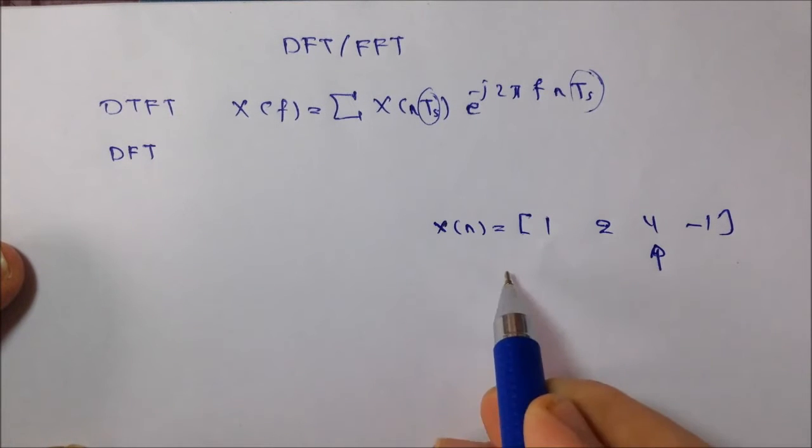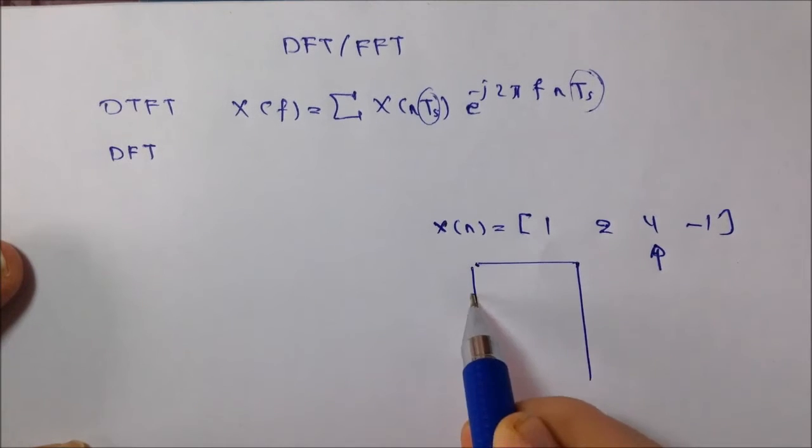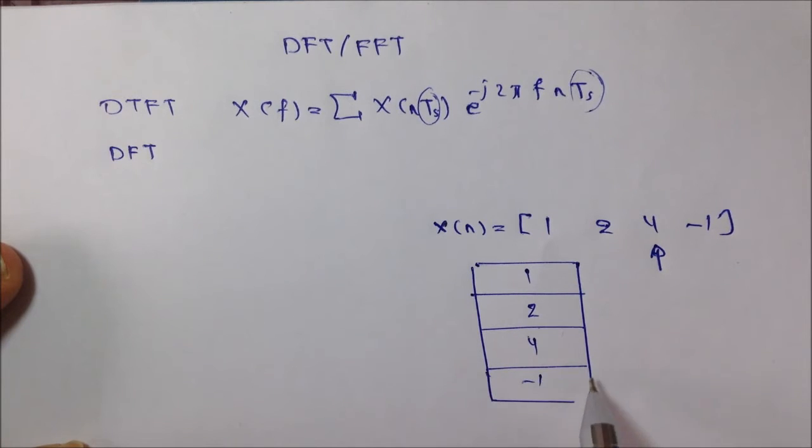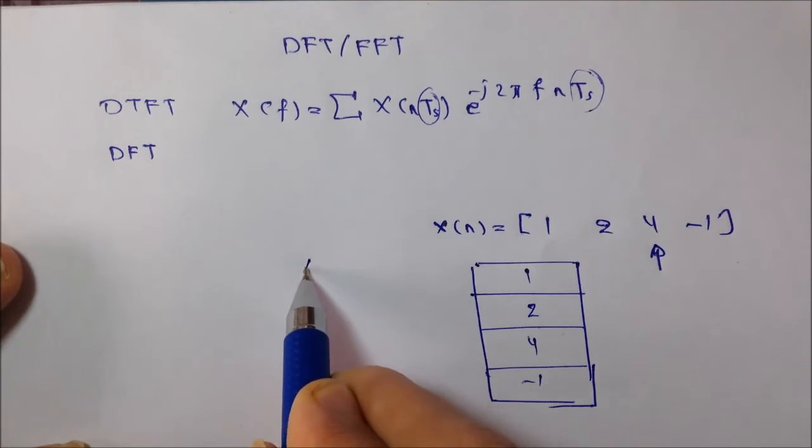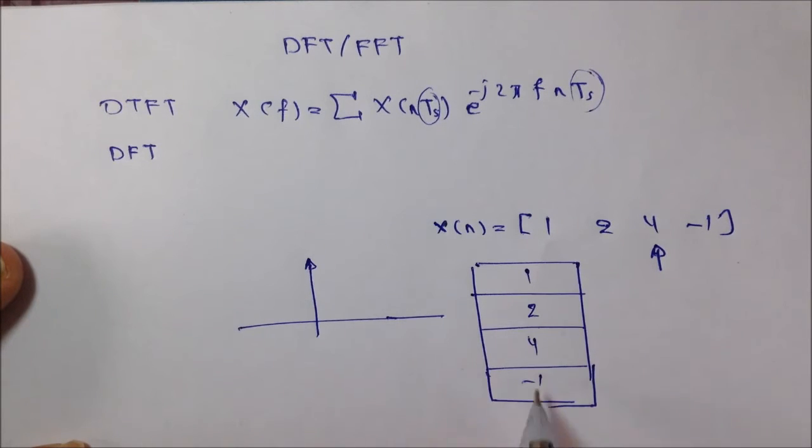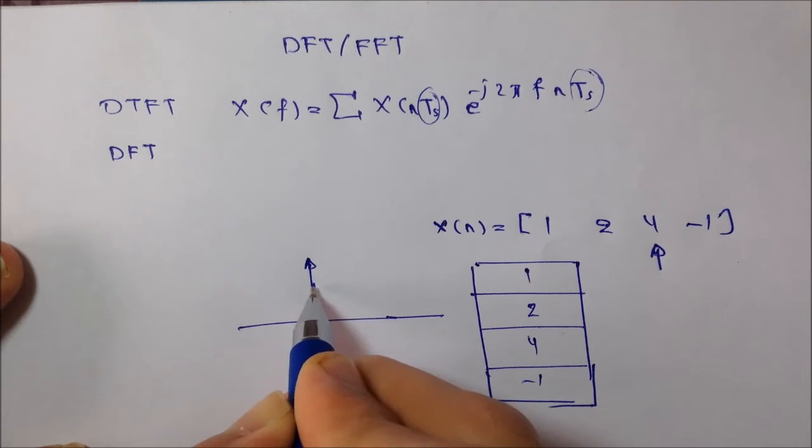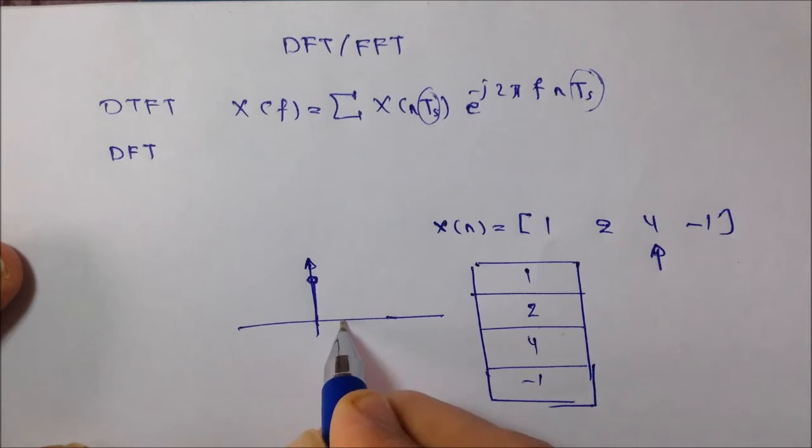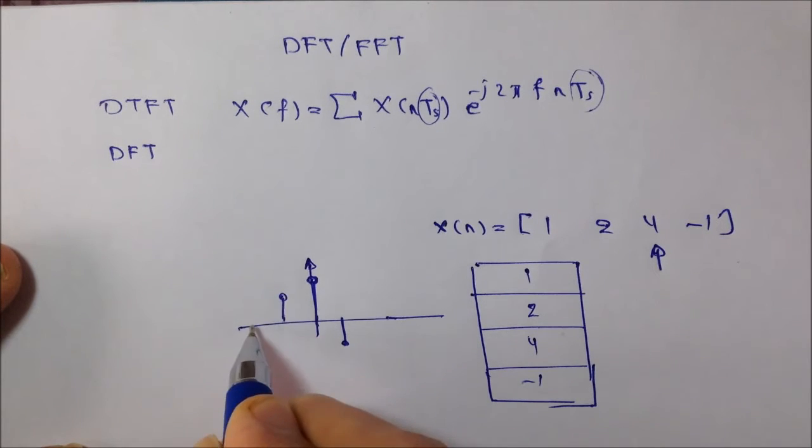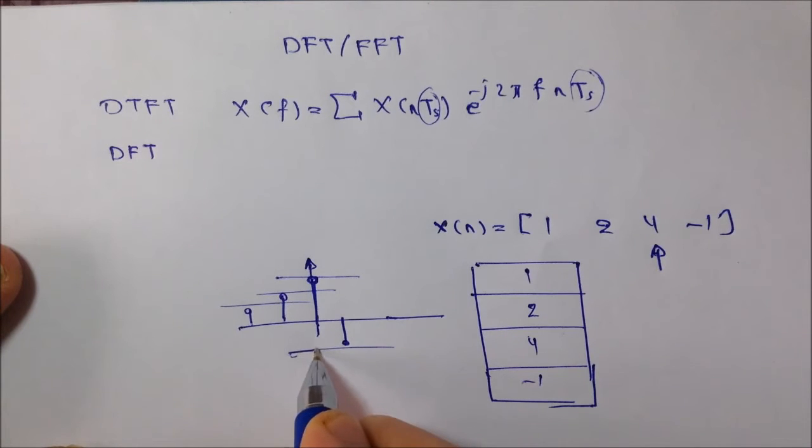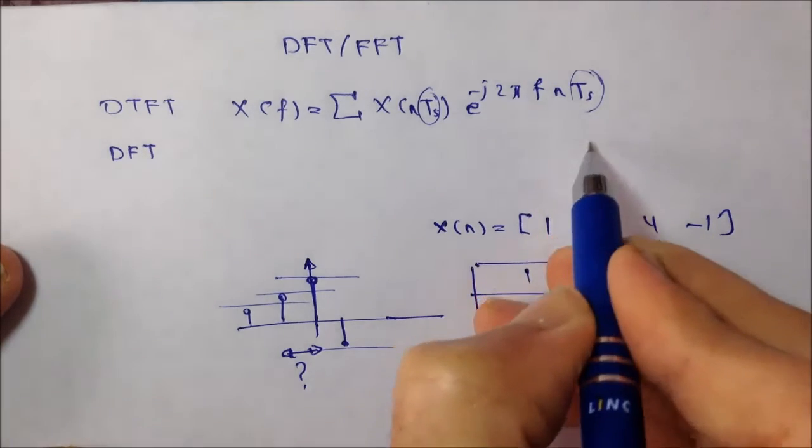And this sequence is stored in a computer memory like this: 1, 2, 4, and minus 1. But the thing is, the computer doesn't know what is the time separation between these samples. If this is the sequence 4, minus 1, and then we have 2 and 1, so the computer has the magnitude of these samples, that's okay, but doesn't know what is the time separation between them.